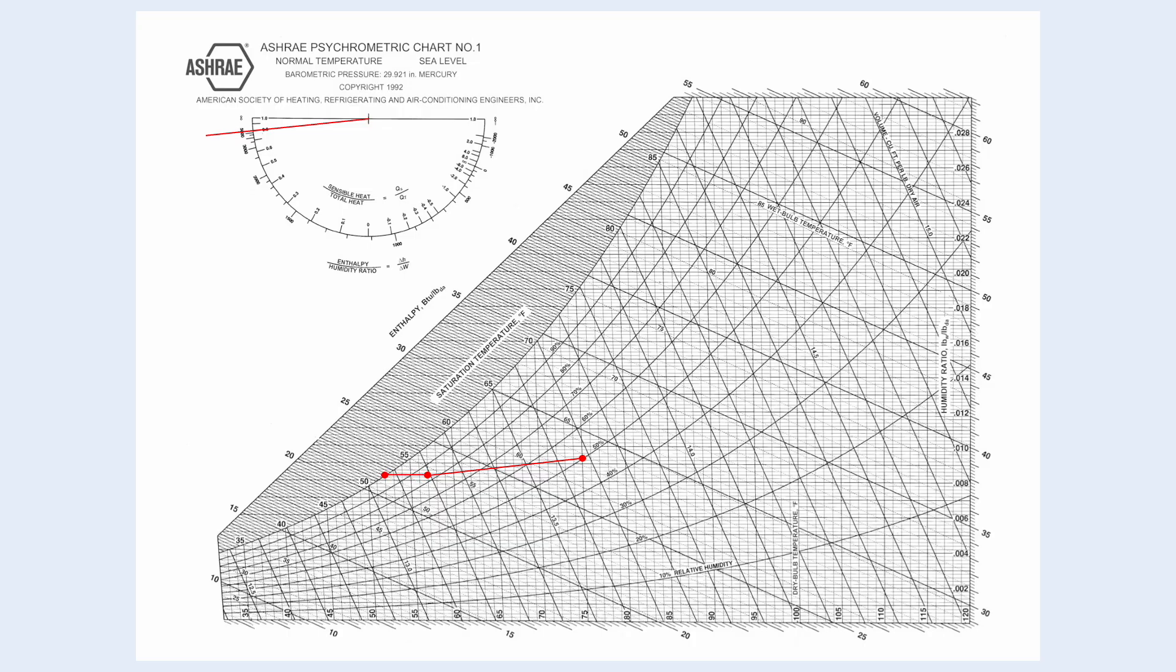Now, the off-coil relative humidity is 100%. However, in practice, it is more likely to be 95%. So, we move the entire line down so that the off-coil condition is 95% relative humidity.